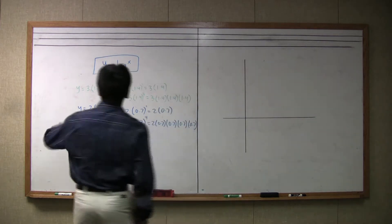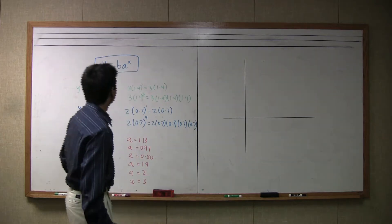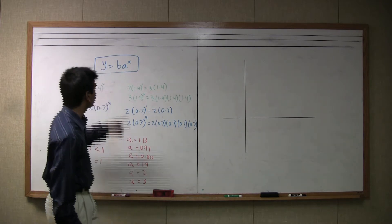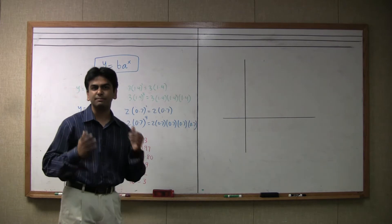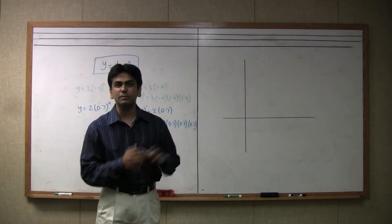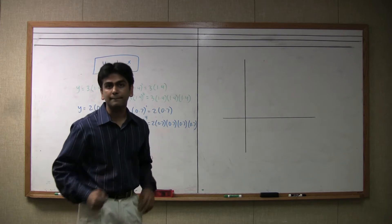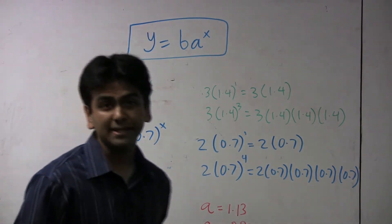So y equals b a to the x is a general form of exponential functions that we'll be looking at initially. So why did I choose the letter b as the initial value? Well, because that's what we use in lines, y equals mx plus b. Most people are used to b being the initial value. So when x is zero, b is what y equals. Same over here. When x is zero, y will equal b.